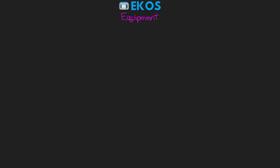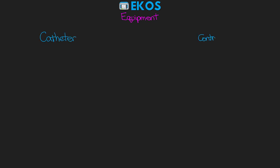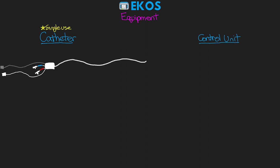There are two main pieces of equipment: the catheter and the control unit. The catheter is a single-use piece of equipment — one catheter, one patient. To utilize EKOS, we insert this special catheter via a six-French sheath. The location of the catheter depends on where the clot is, whether it's venous or arterial, as well as patient and provider preference. The most common access sites are femoral, internal jugular, or brachial.